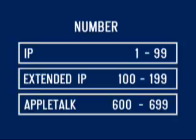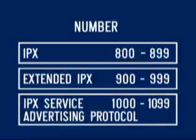When configuring ACLs on a router, you must identify each access list uniquely within a protocol by assigning either a name or a number to the access list. When a number is used to identify an access list, the number must be within a specified range of numbers that is valid for the protocol.